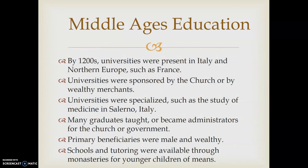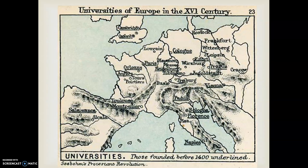In some cases we see other models for education: some schools, tutoring, monasteries still supporting education, and some girls getting education at home if they came from wealthy families. This gives you a sense of where some of these universities were — quite a few still exist. Florence, Padua, Paris, Cambridge, Oxford, Wittenberg in Germany, Salamanca in Spain — these were popular universities, some developing as early as the 1200s, others around the 1500s.